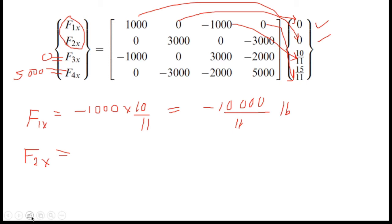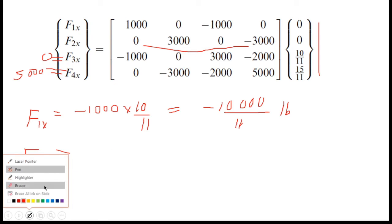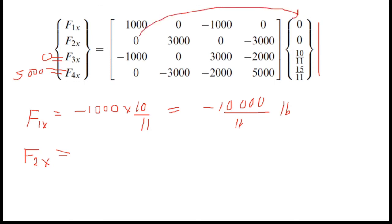I will multiply the values: 0 with 0 becomes 0, and 3000 with 0 is also 0, and 0 with 10 over 11 is also 0, and finally minus 3000 with 15 over 11.